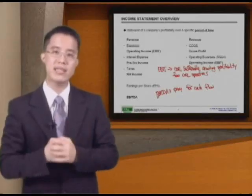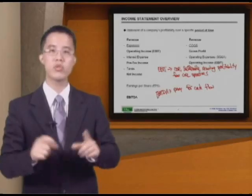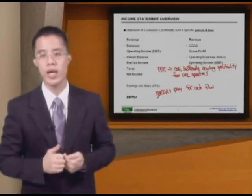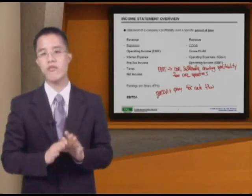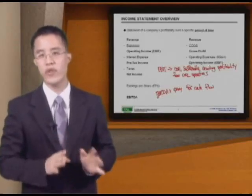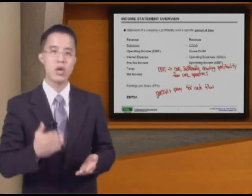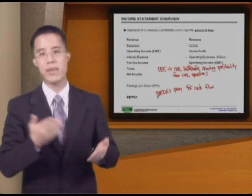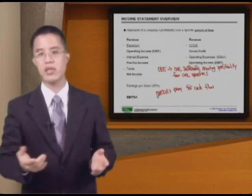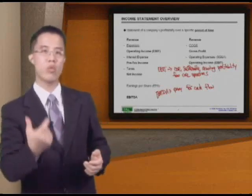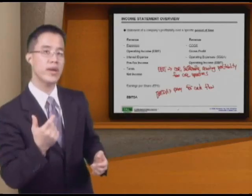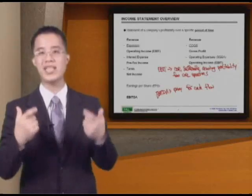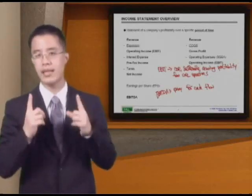Why do we add these numbers in? Because we're trying to get what we call a Proxy for Cash Flow. If you ask old school bankers and financial analysts, this EBITDA is exactly the same as the Cash Flow number — they're trying to figure out the Core Sustainable Recurring Cash Flow from the entire company's operations, and that is key.